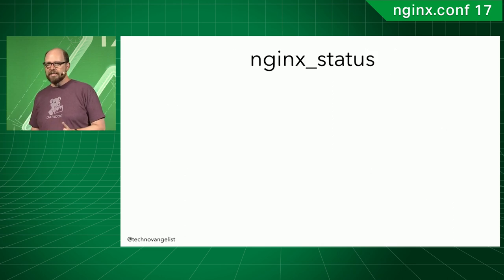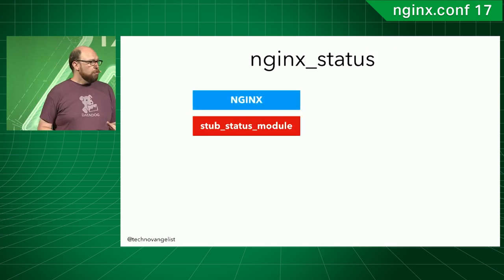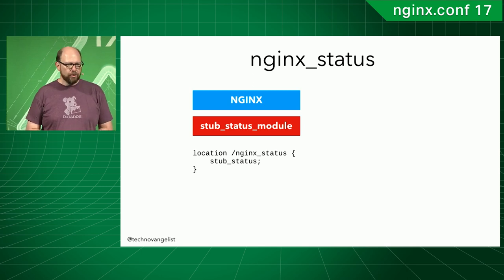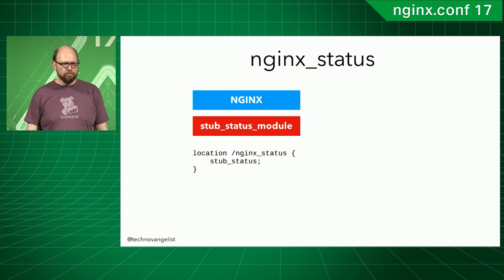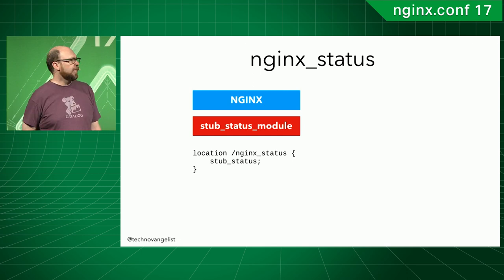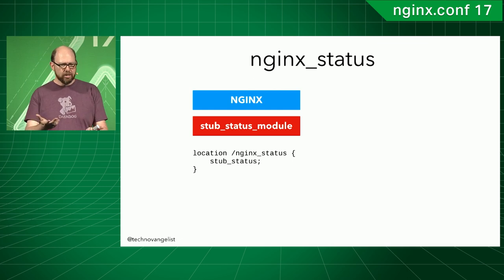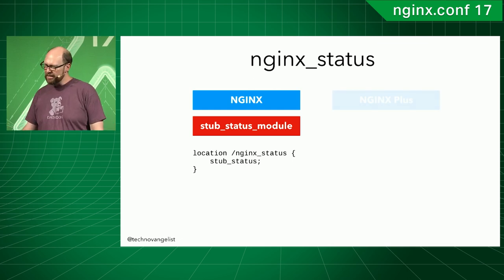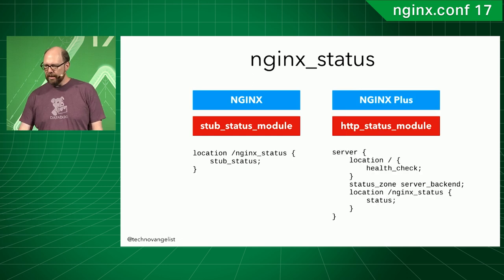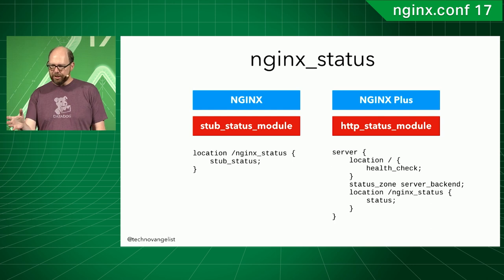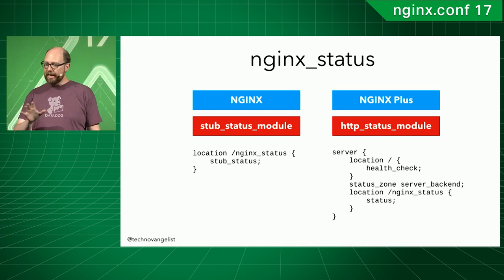How do you set up Nginx status? If you've got the open source version of Nginx, you create a location block, name it nginx_status, and add the stub_status module in there. The output of stub_status will show up on that endpoint. A pretty similar thing applies in Nginx Plus — just a location block calling the status command. That's pretty easy.